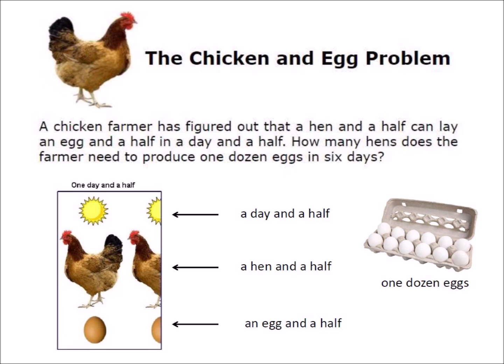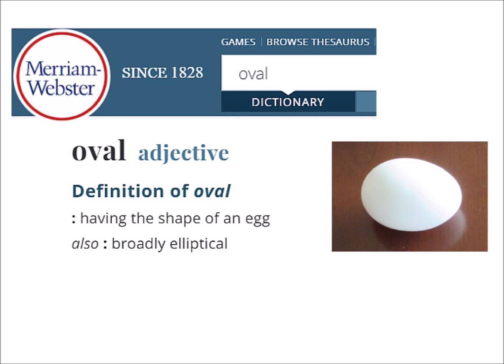But first we discuss the differences between ovals and ellipses. The word oval describes the shape of an egg. Sometimes it is used broadly to characterize an ellipse, but an oval does not have a precise mathematical definition.